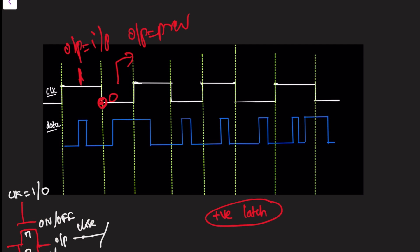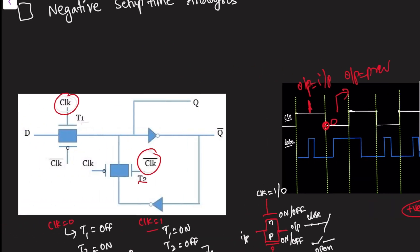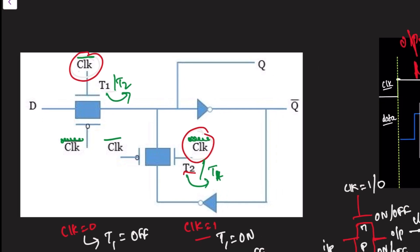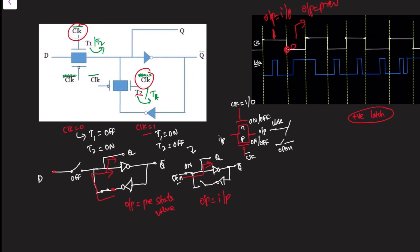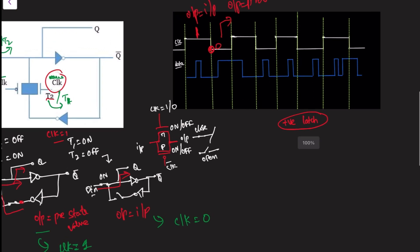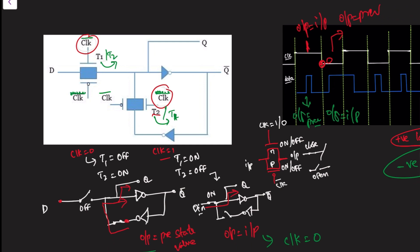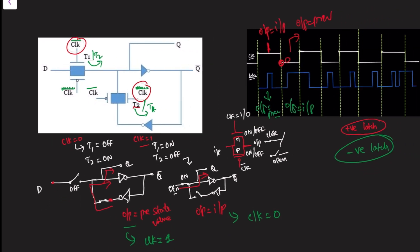In the negative cycle the latch retains the previous value. Similarly, if you swap the connections — put clock-bar where clock was and clock where clock-bar was — you are replacing T2 with T1 and T1 with T2. Now output follows the input when clock equals zero, and output equals previous state when clock equals one, which makes it a negative latch. So the same diagram with swapped transmission gates gives you either a positive or negative latch.